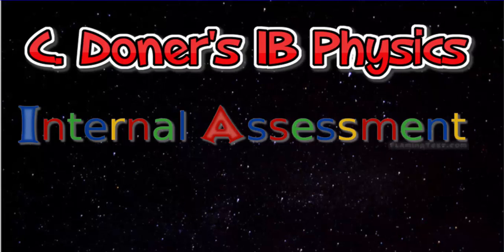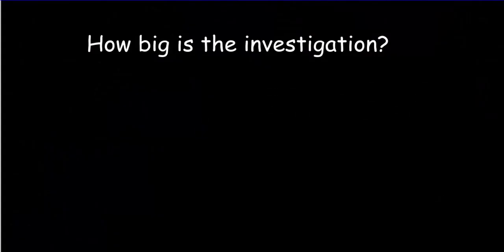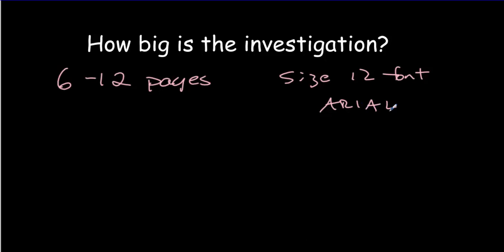Let's take a look at internal assessment today, commonly called the IA. It's an investigation and experiment that you need to plan and carry out. The IB recommends somewhere between 6 and 12 pages written in size 12 Arial font, so it's not really a big project. You need to write quite concisely and be quite focused in what you're saying, make sure that it's coherent.